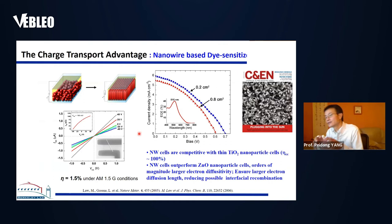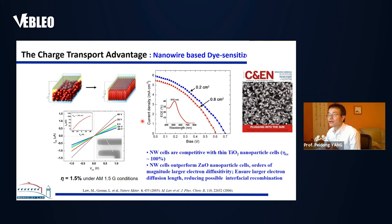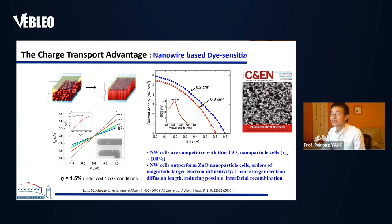Now let me get into the energy conversion side of using semiconductor nanowires. Our first efforts started with a relatively simple experiment—basically trying to demonstrate the unique advantage of using semiconductor nanowires in solar energy conversion research. The first study applied zinc oxide nanowires as single-crystalline electrodes in dye-sensitized photovoltaics. The conclusion is that nanowires have an electron transport advantage: electron diffusivity in these one-dimensional single-crystal channels is much better than in a simple aggregation of nanoparticles.